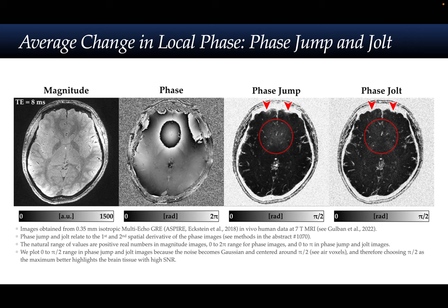On the second panel, you see the same slice but its phase image, and of course the wraps are visible. When we compute the magnitude of the first derivative, we call it the phase jump. If we compute the magnitude of the second derivative, we call it phase jolt.